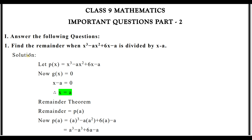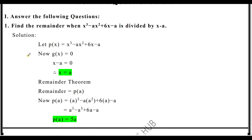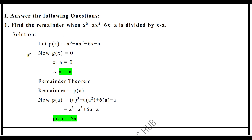First question: find the remainder when x³ minus ax² plus 6x minus a is divided by x minus a. Here, p(x) equals x³ minus ax² plus 6x minus a.